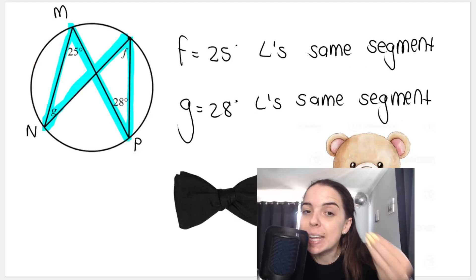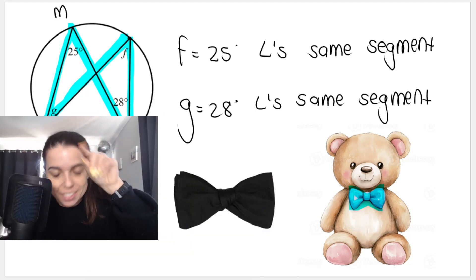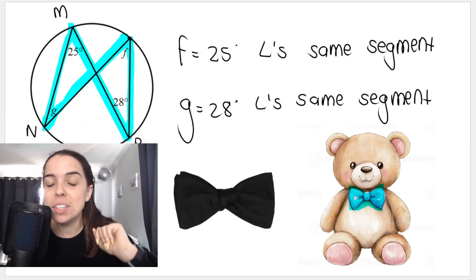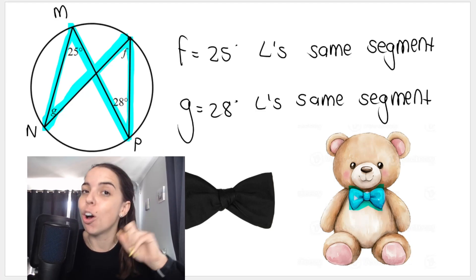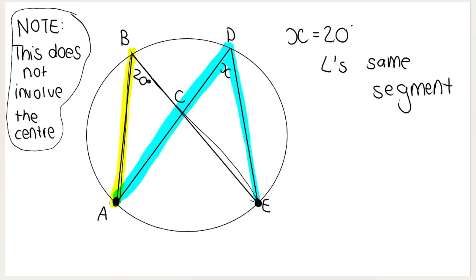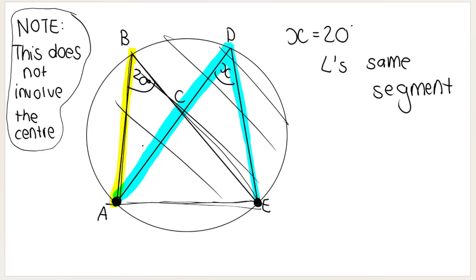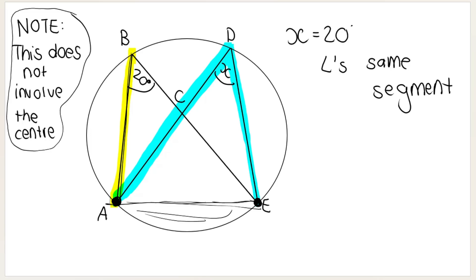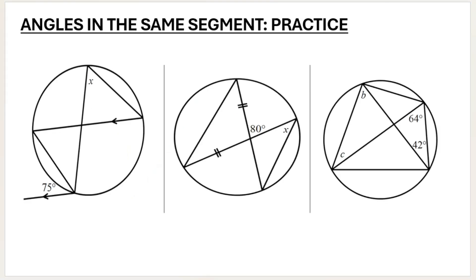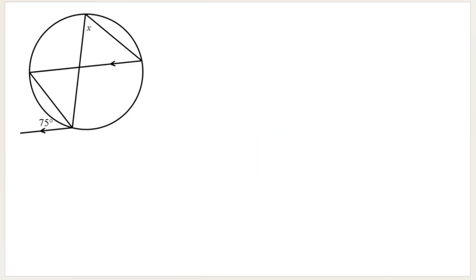Just remember for angles in the same segment we're looking out for the bow tie. The angles in the same segment theorem does not involve the center of the circle and the angles must be in the same segment. You can see that this angle and this angle over here, x is 20. These angles are in the same segment A and E — if you connect them that breaks up the circle into a very big segment up here and then a little segment down here. You can see that x and the 20 degrees are in the same segment, that's very important.